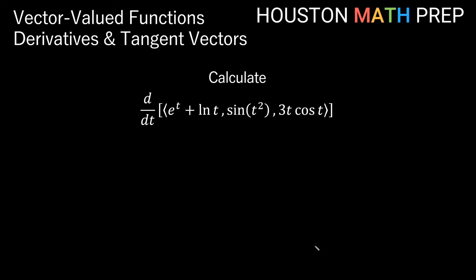We'll work through a basic example. We're going to calculate the derivative with respect to t of the vector-valued function: e to the t plus ln t, comma, sine of t squared, comma, 3t times cosine of t. We take the derivative of each component. For x prime of t, the derivative of e to the t plus ln t is e to the t plus 1 over t.